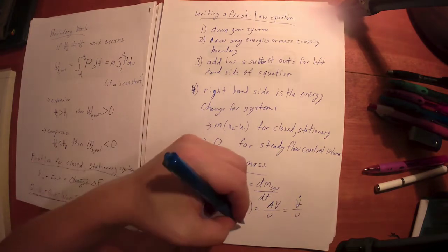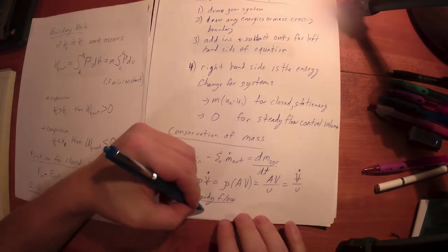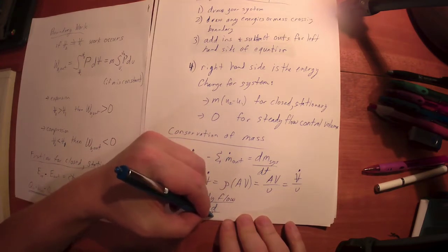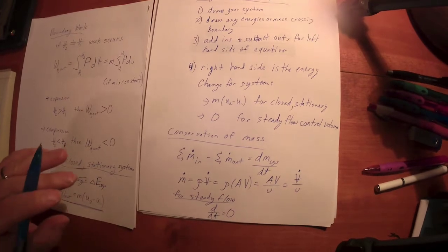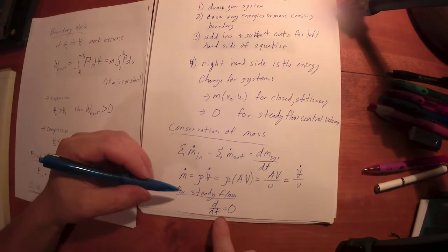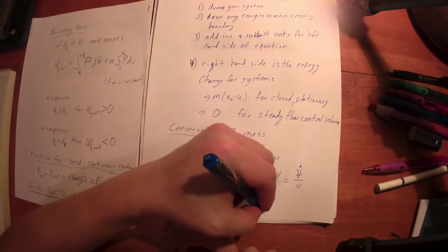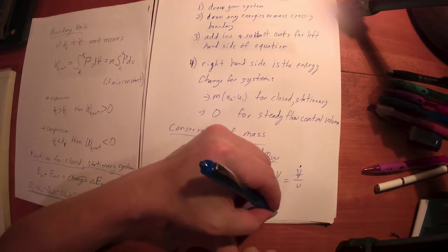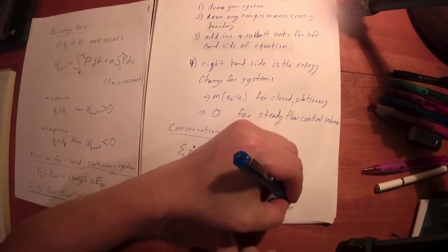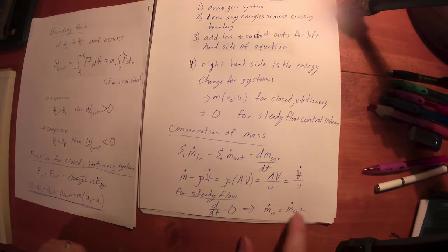For steady flow, a lot of texts will call this steady state, that means everything becomes constant with respect to time. I'm on the screen. Everything becomes constant with respect to time for steady flow, this goes to zero. So that tells me that the rate of mass in is equal to the rate of mass out.